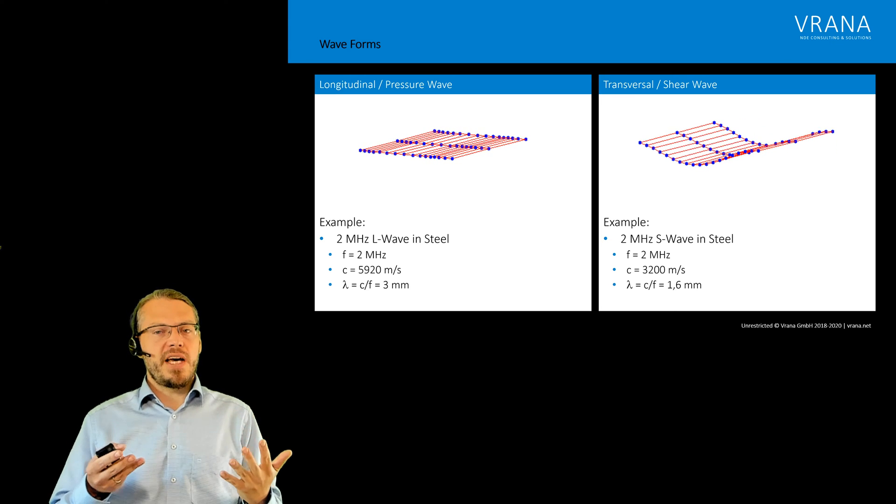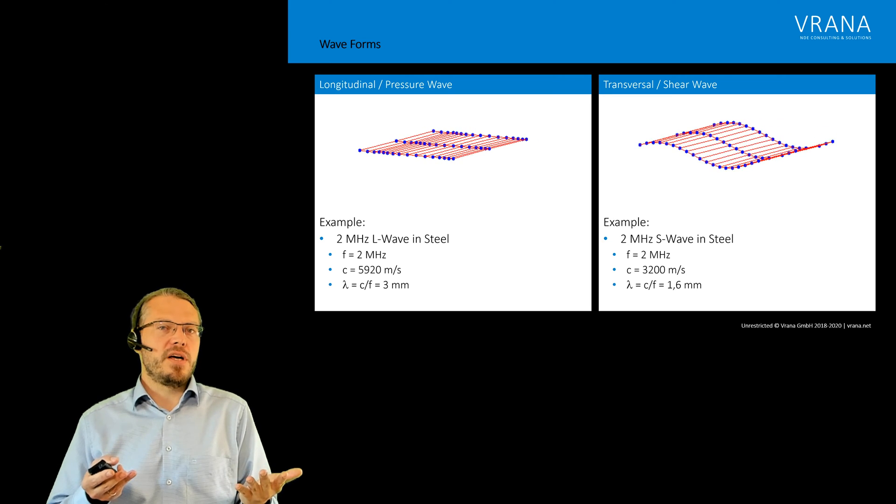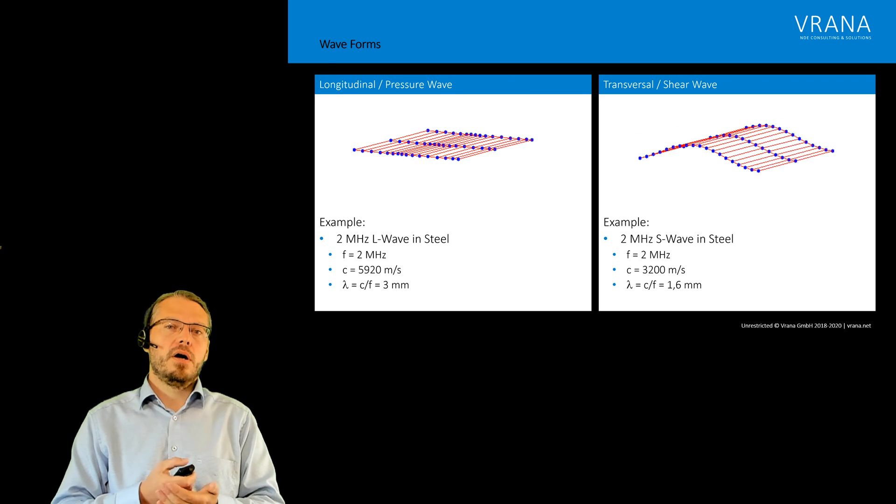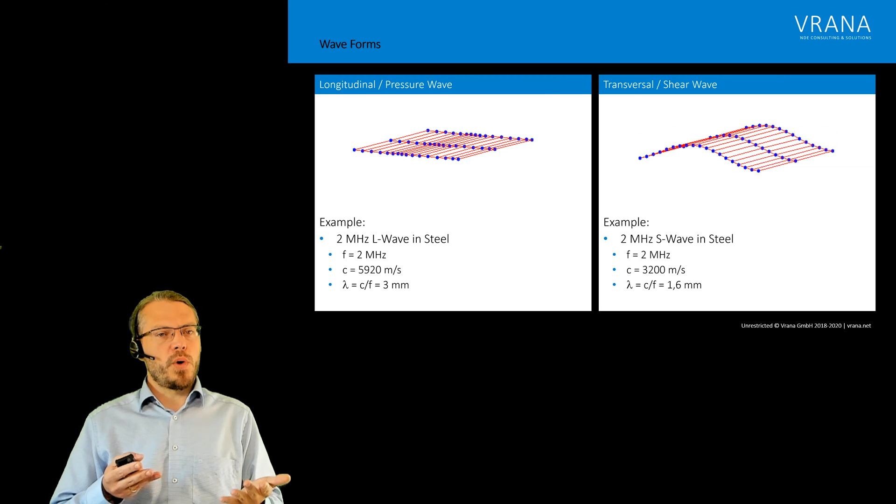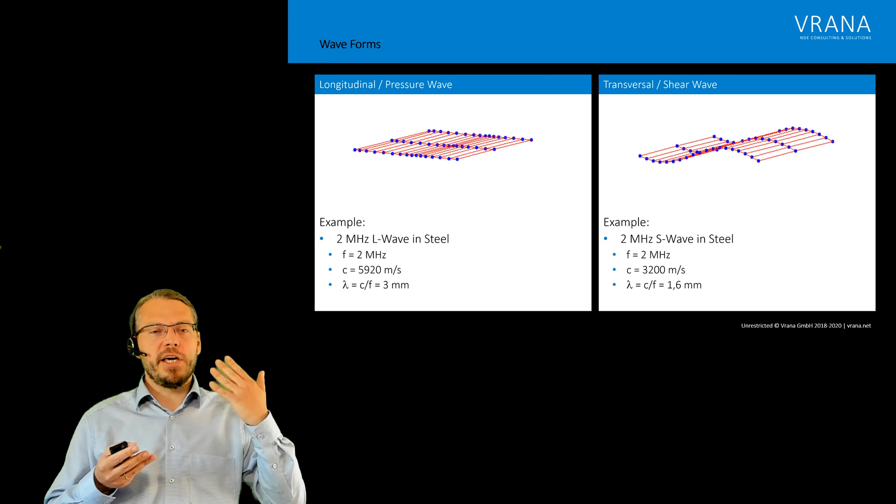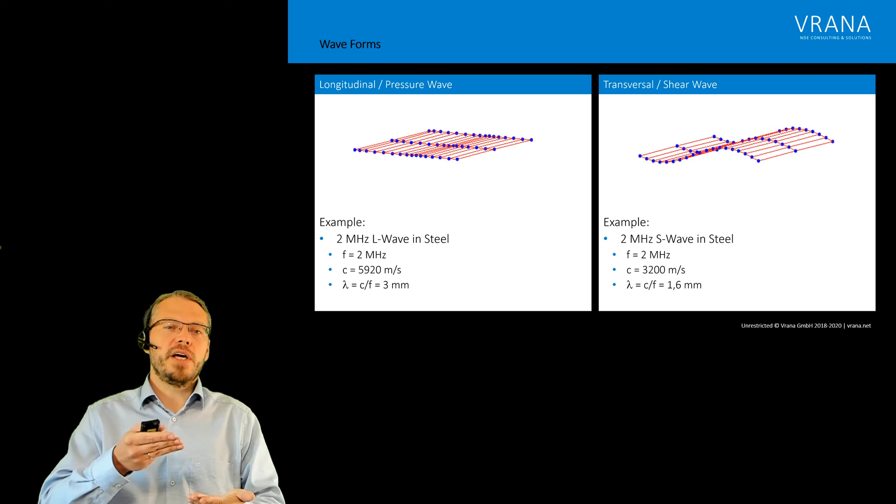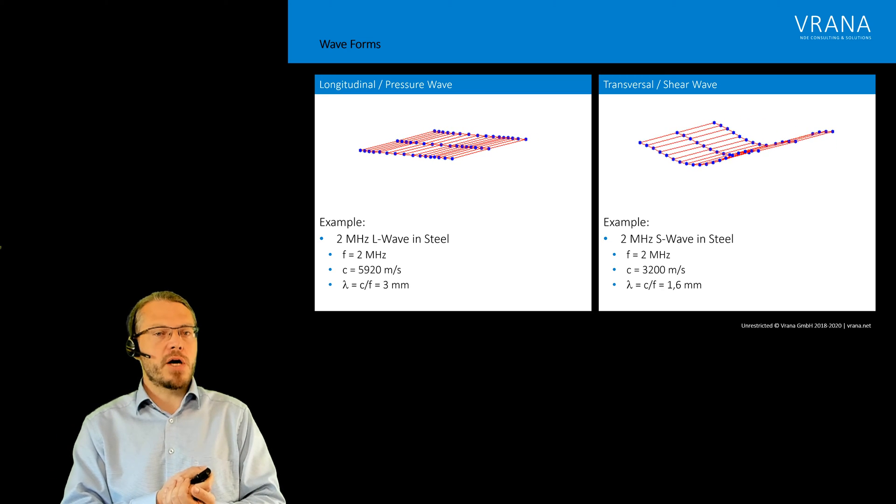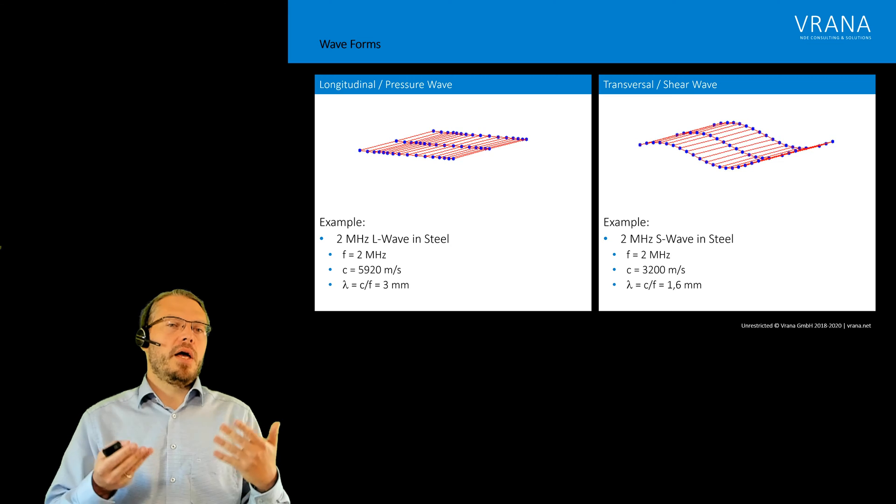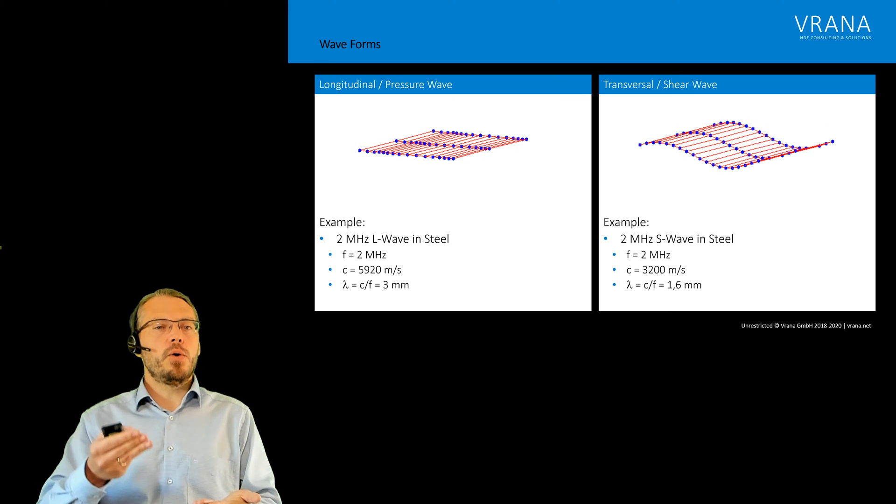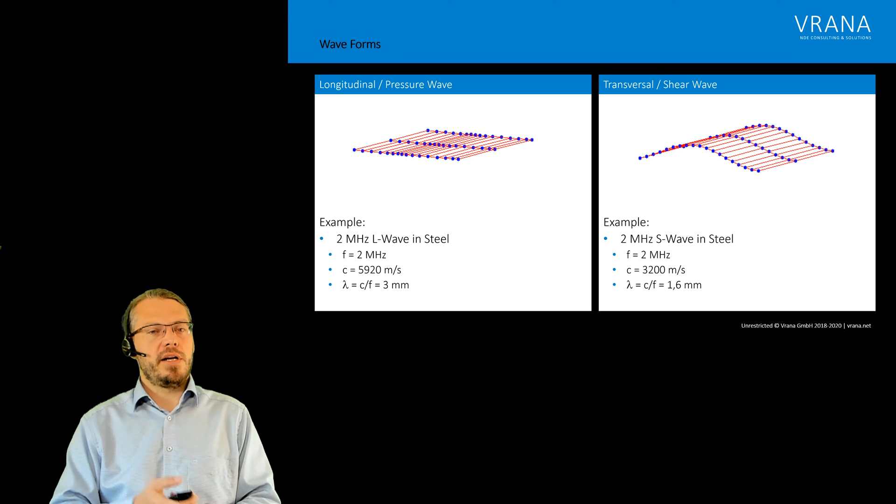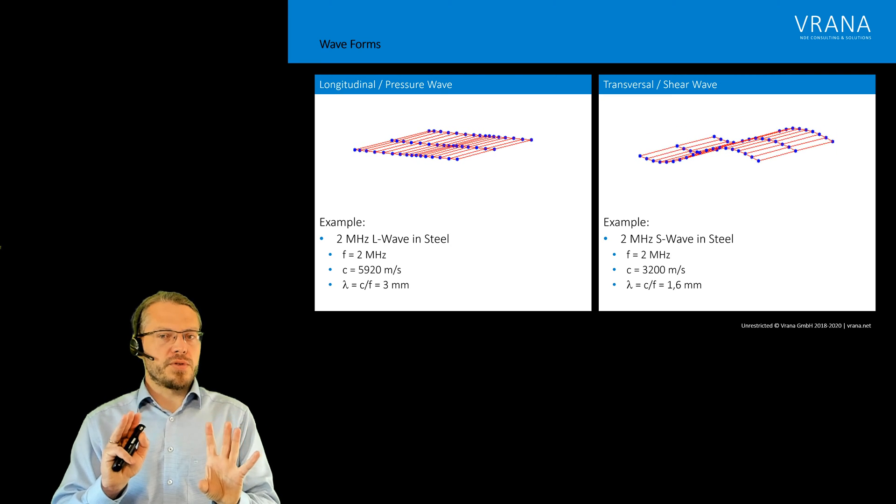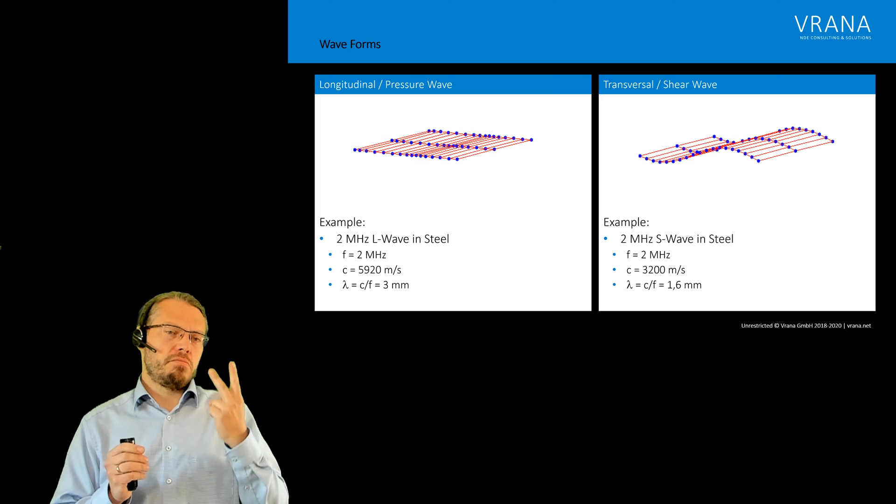Now if you think about the speed of sound in air, that one is actually way slower, it's about a tenth of the speed of sound which we have in steel. This is one of the reasons why if you think about putting your ear onto the tracks of a train, you hear the train way better than you hear it through the air because your wave is coming way quicker. Reason number two is that your sound attenuation is way lower also in steel than you have it in the air. So those are the two very fundamental waveforms. Now there are a couple more and I want to mention two of them.